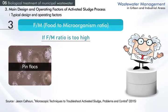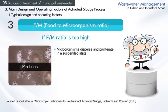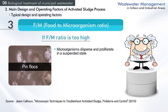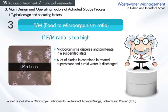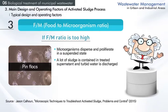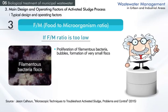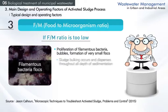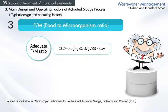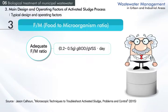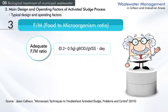Adequate F/M ratio forms microbial flocks well and sinks sludge fast, so relatively low turbidity of treated water is obtained. However, if F/M ratio is too high, microorganisms do not form flocks but rather disperse in a suspended state, causing turbid discharge. If F/M ratio is too low, activated sludge cannot sink due to filamentous bacteria proliferation, sludge foaming, and pin flock formation, causing sludge bulking throughout the sedimentation. The adequate F/M ratio range for general activated sludge process is 0.2 to 0.5 grams of BOD per gram of VSS per day.